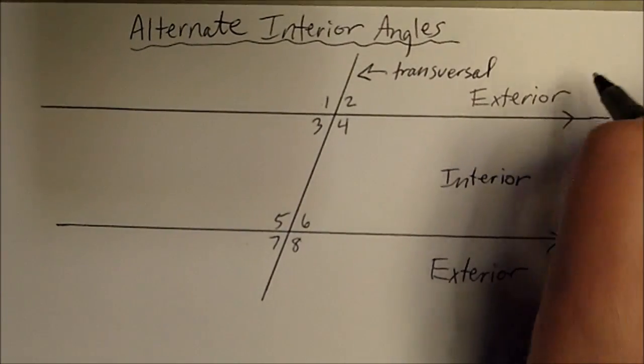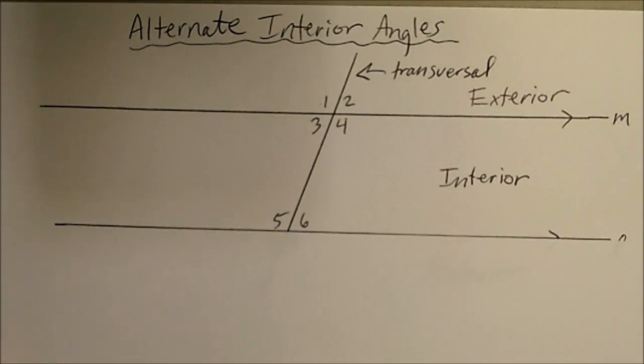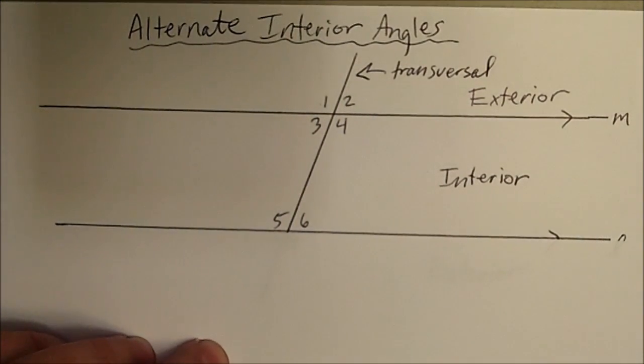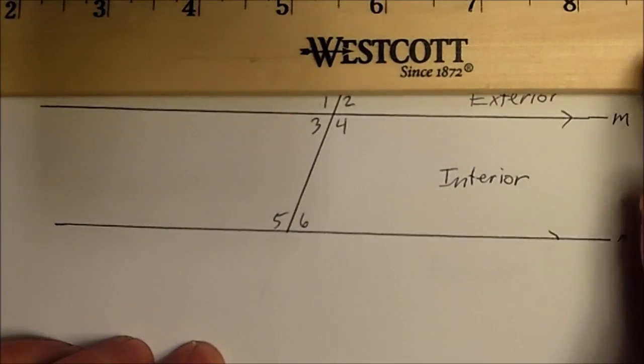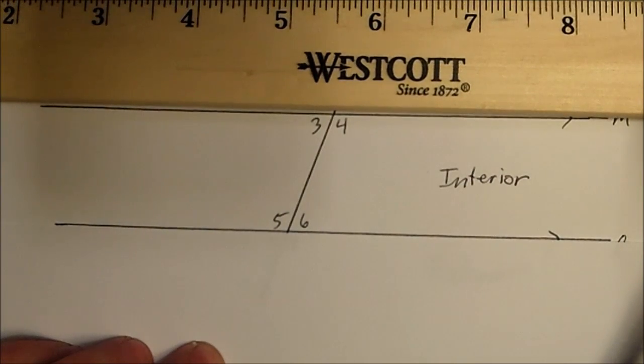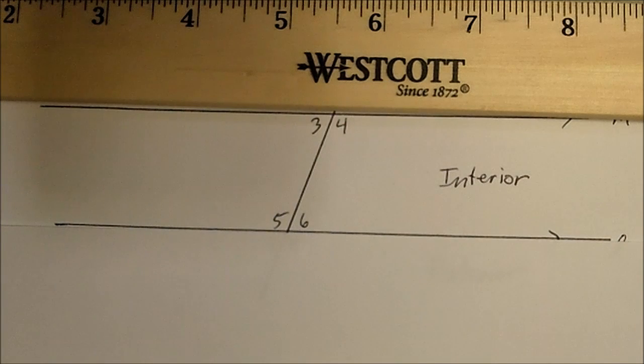I'm going to cover up the exterior area. We have the word exterior away, and angles seven and eight taken away. I'm also going to use my ruler to cover up the other exterior, angles one and two. Now I'm left with only angles three and four, and angles five and six.